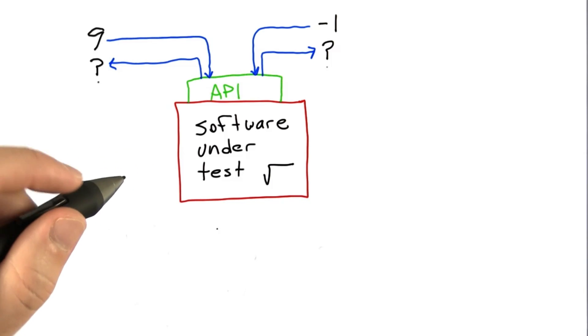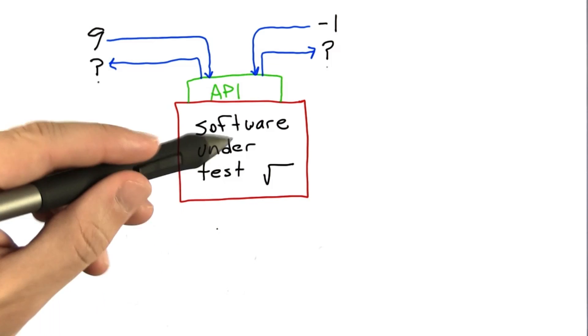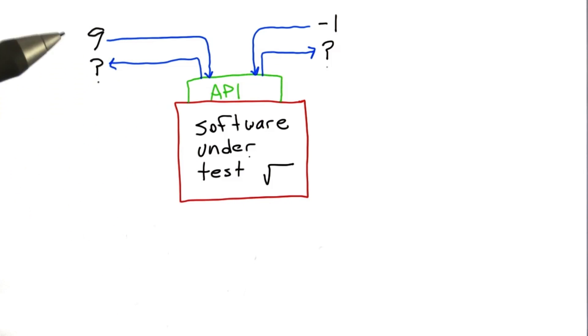What I'd like to do now is look into this issue in more detail. If we think about a piece of software as a mathematical object - and of course that's very natural for something like a square root function - we can do this for any piece of software.